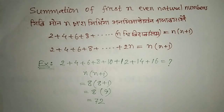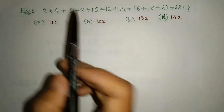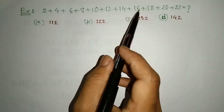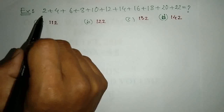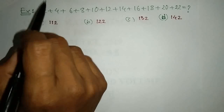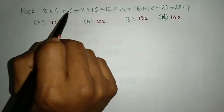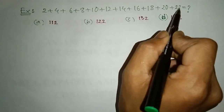We are going to get 100. We are going to get 2 plus 4 plus 6 plus 8 plus 10 plus 12 plus 14 plus 16 plus 18 plus 20 plus 22. So if we are going to get 100, we will get 100.